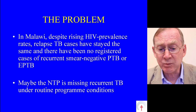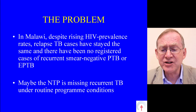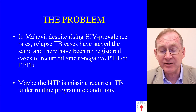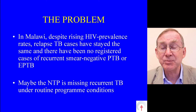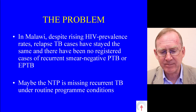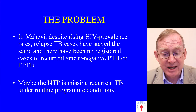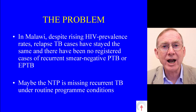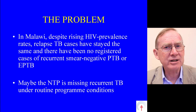So the problem in Malawi was this: despite rising HIV prevalence rates, relapse TB cases have stayed the same, and there have been no registered cases of recurrent smear negative pulmonary TB or extra pulmonary TB. Therefore, the NTP was concerned that maybe under routine programme conditions it was missing recurrent tuberculosis. This is why the study was conducted.